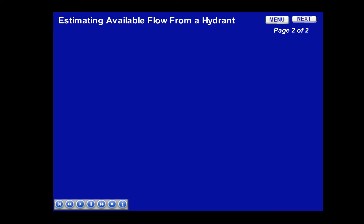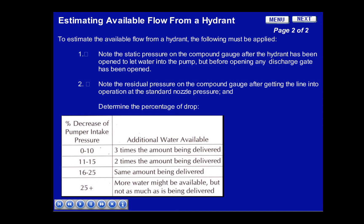Estimating the available flow from a hydrant. To estimate the available flow from a hydrant, the following must be applied: Note the static pressure on the compound gauge after the hydrant has been opened to let the water into the pump, but before any discharge gate has been opened. Then, note the residual pressure on the compound gauge after getting aligned into operation at the standard nozzle pressure, and this determines the percentage of the drop.